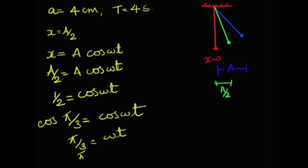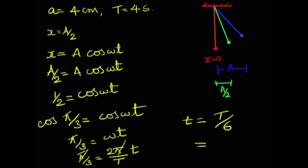We know that ω = 2π/T, so substituting: π/3 = (2π/T)·t. The π's cancel and we get t = T/6. With T = 4 seconds, t = 4/6 = 2/3 seconds. This is the time taken by the oscillator to move from the extreme point to half of the amplitude.